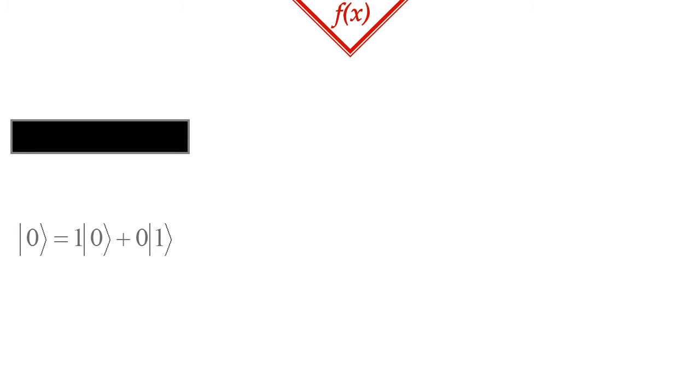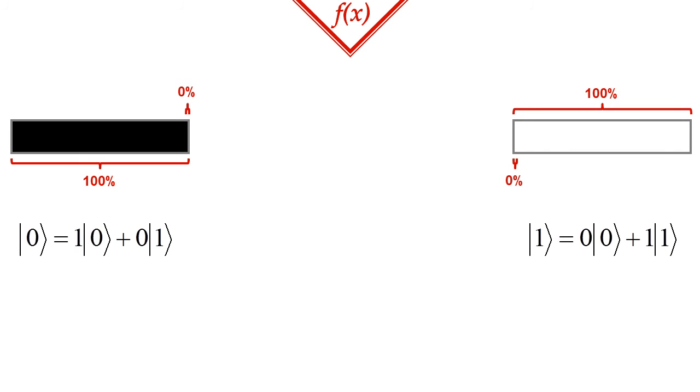For example, a classical 0 state means the probability amplitude of a ket 0 vector is 1, and the probability amplitude of the ket 1 vector is 0. If we were to measure the value of this qubit, then the result would be 0 100% of the time. For a classical 1 state, it's the other way around.